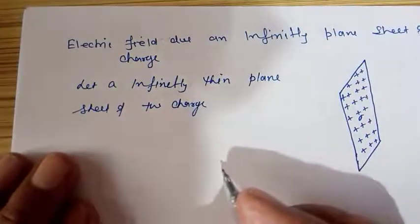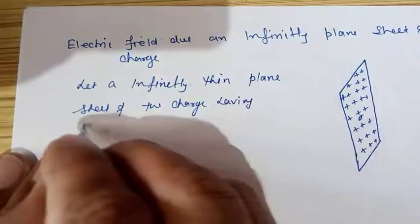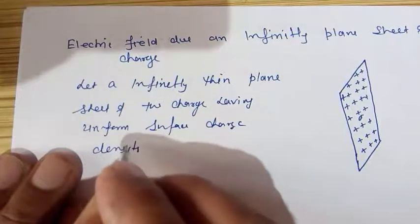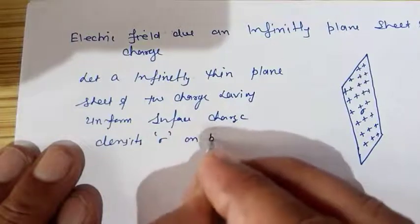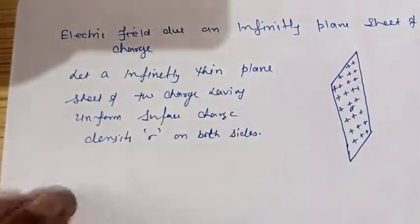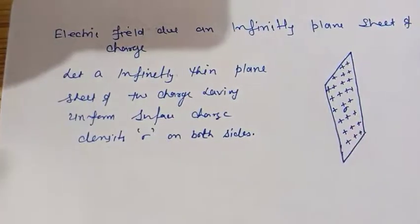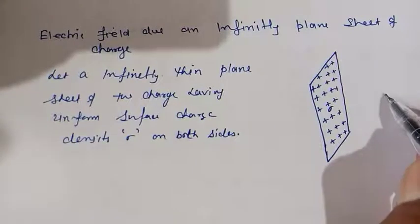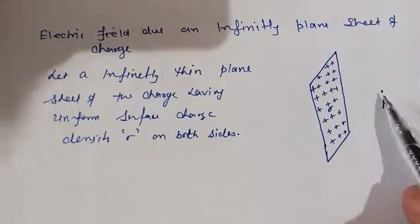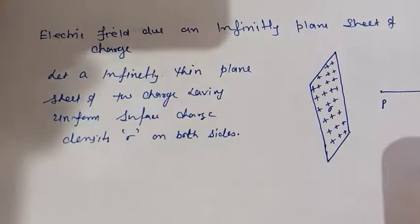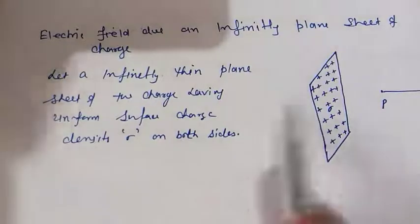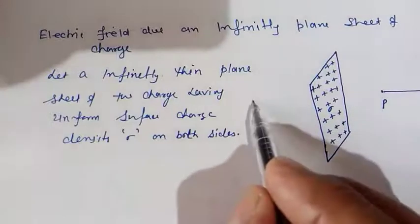Let an infinitely thin plane sheet of positive charge have a uniform surface charge density sigma on both sides. Now we have to find the electric field due to this infinitely plane sheet of charge. Suppose you are interested to find the electric field at point P. For a positive charge, the electric field is radially outward. Since charge is distributed on both sides, the electric field at point P will also be radially outward.